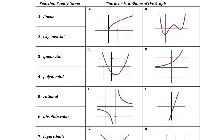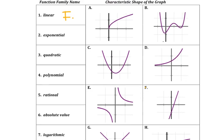Now, looking at their shapes. The basic shape for linear is a straight line, so that would be f. For exponential, it's a curved line, but it usually starts around the x-axis and then curves up, so it would end up being d. The quadratic — that's the parabola shape, we should know that's c. Polynomial is a shape kind of like a quadratic but has a little more to it, so that's actually b.